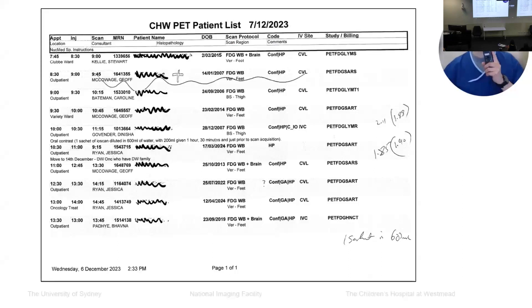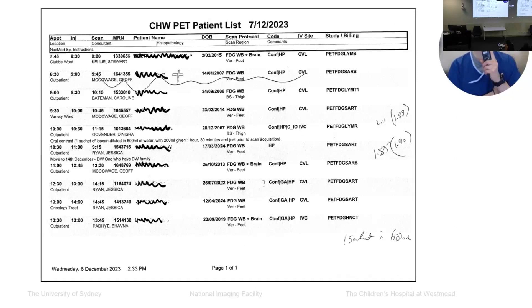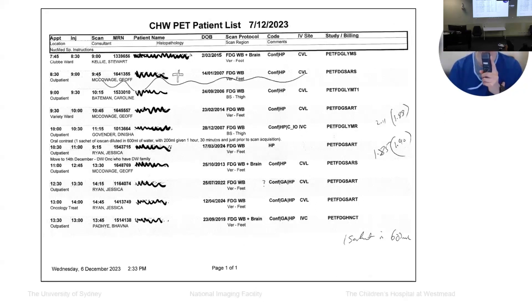For those of you that may not be aware, the Westmead Children's Hospital shares a PET-CT facility with Westmead Adult Hospital, and the staff from the Children's Hospital walk up the corridor and take control of the PET facility one day a week to perform the paediatric scans. I've put on the screen a standard worklist, and I will use this as a basis to show a few cases that illustrate where the enhancements of total body PET-CT are for paediatric imaging specifically.